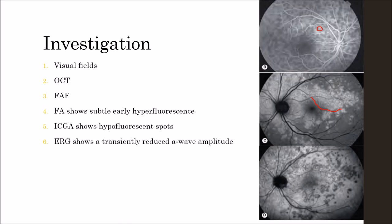Indocyanine green angiography (ICGA) shows hypofluorescent spots, as seen in this figure. The spots which were hyperfluorescent on fluorescein angiography appear hypofluorescent on ICGA, and are quite prominent. They are also more numerous than visible clinically or on fluorescein angiography.